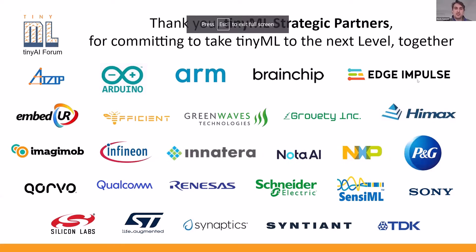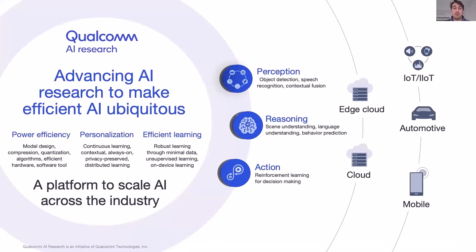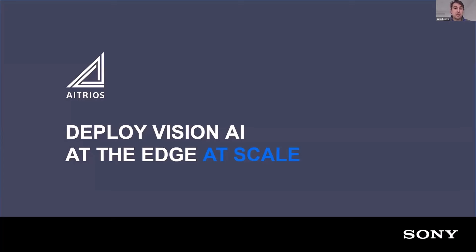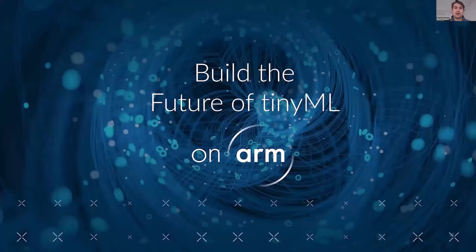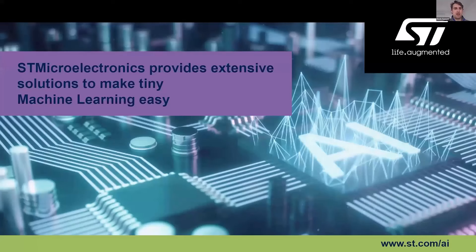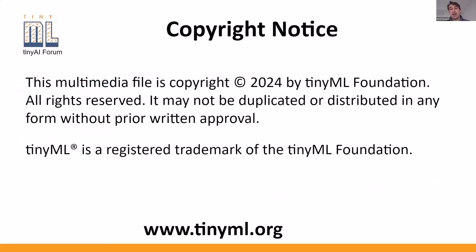A big thank you to all of our sponsors that make this possible — in particular, the executive strategic partners of TinyML: Qualcomm AI, Sentient, the Platinum strategic partners EmbedUR and Sony AI, the Gold strategic partners ARM, Edge Impulse, Infineon, Renesas, STMicro, and Synaptics, and the Silver strategic partners AIZip, Arduino, Brainship, Be Efficient, GreenWaves, Gravity, IMAX, Imagimob, Inaterra, Noda AI, NXP, Procter & Gamble, Schneider Electric, SenseML, Silicon Labs, and TDK. That concludes our first day — we have more action-packed agenda for tomorrow as well.